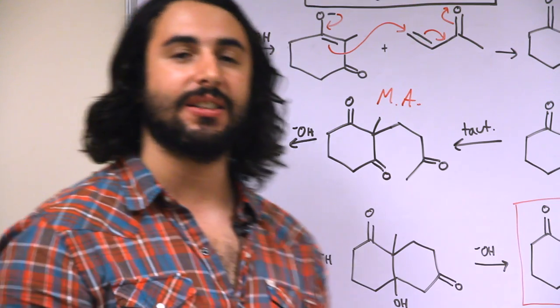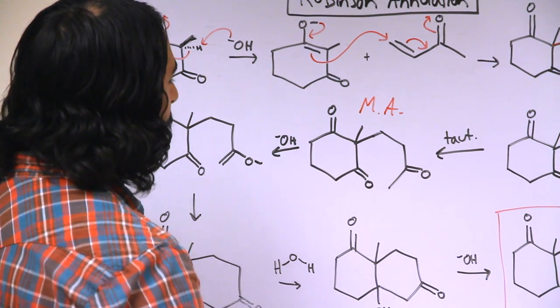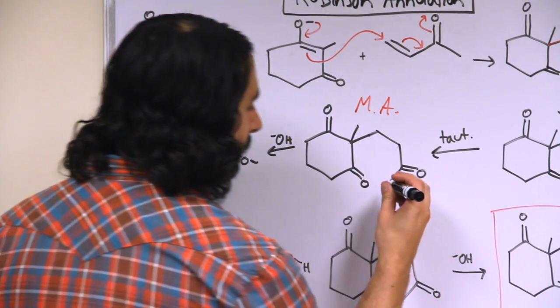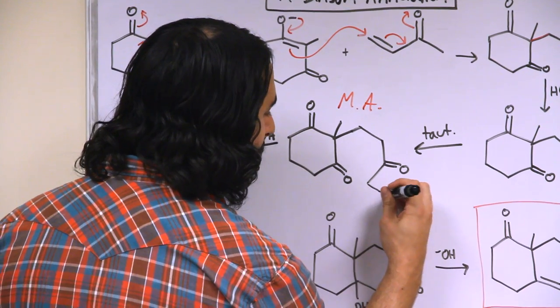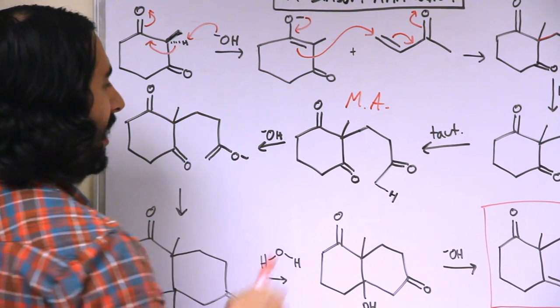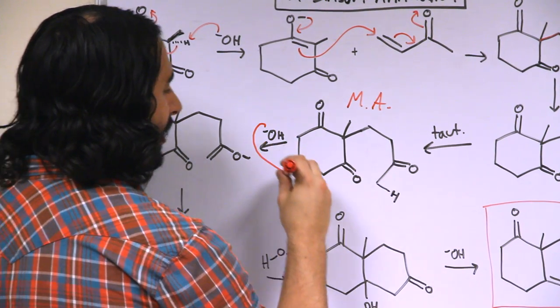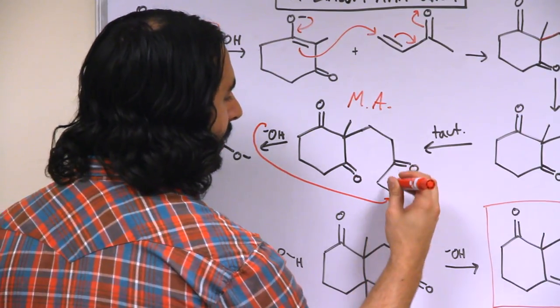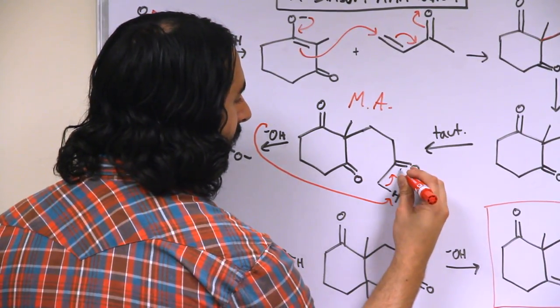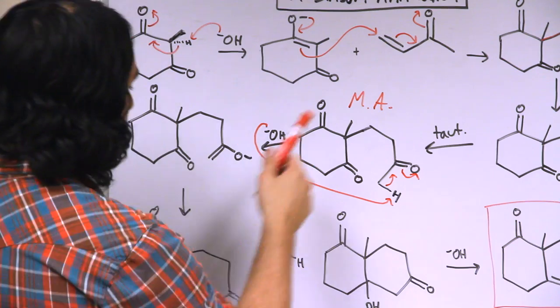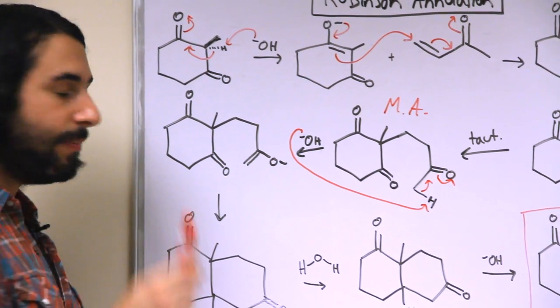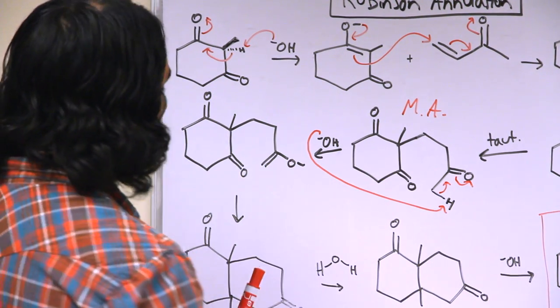Now the interesting thing is, let's take a look. If we are going to deprotonate again, let's say we deprotonate at this position. So I'll draw in one of the implied hydrogens and this hydroxide will go and grab this. This bond will go here and we will generate another enolate.